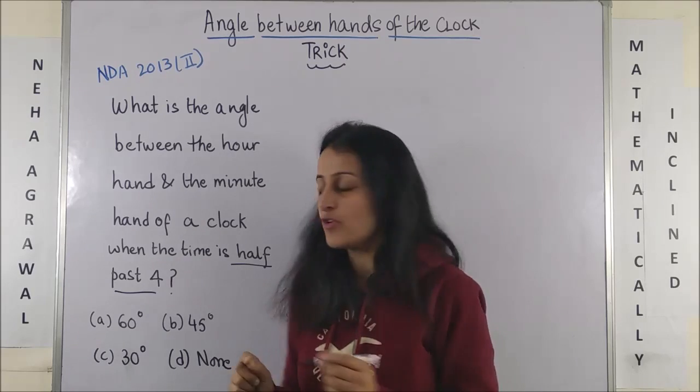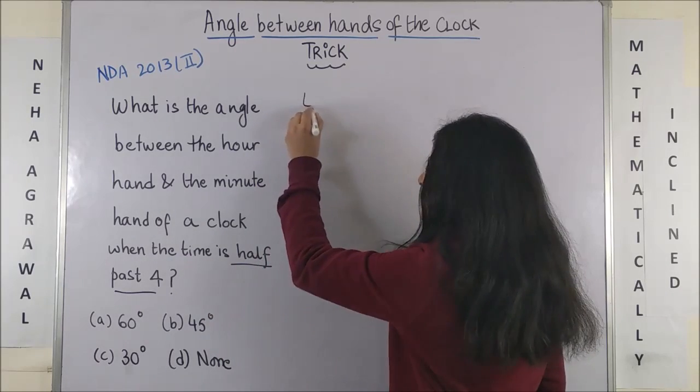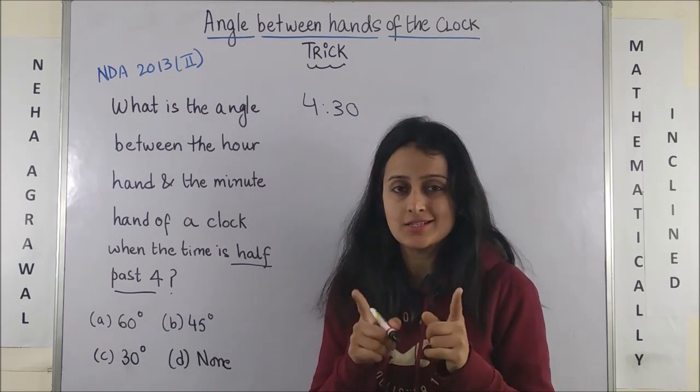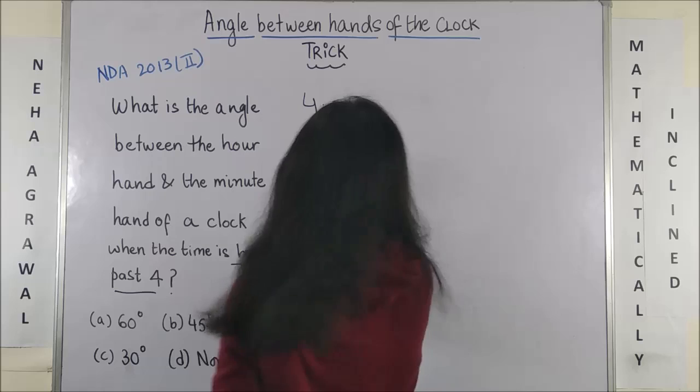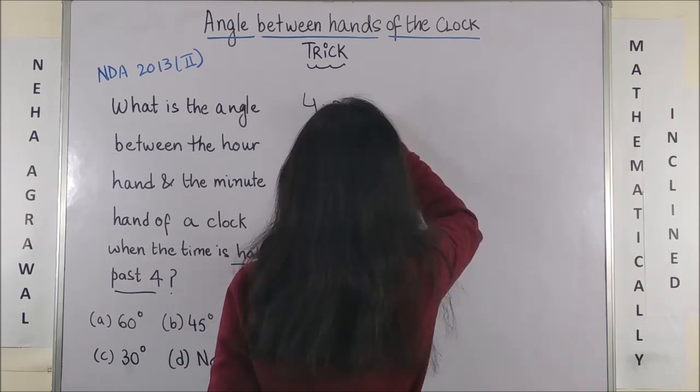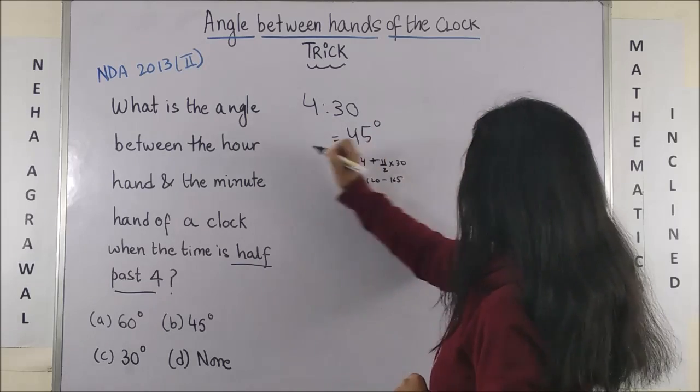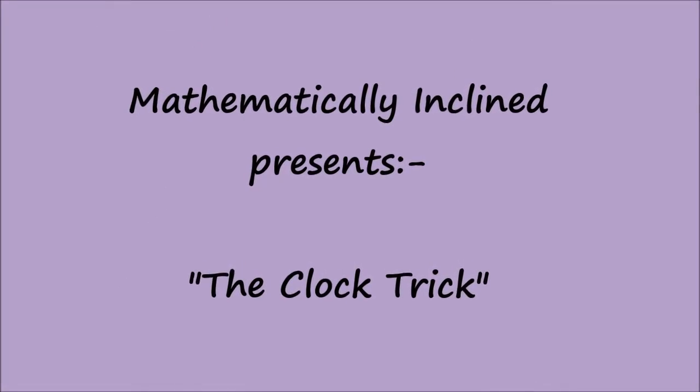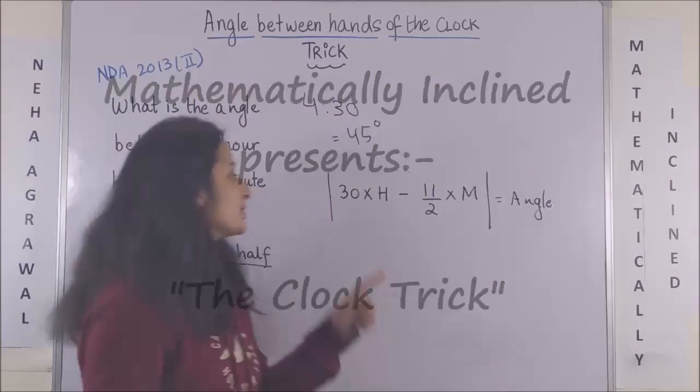Half past four means when the time is 4:30. So to find this angle, let's discuss this super trick. The answer is 45 degrees.